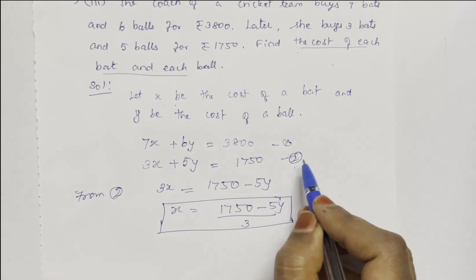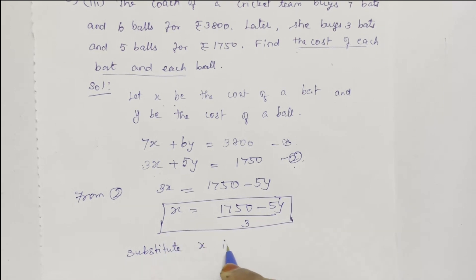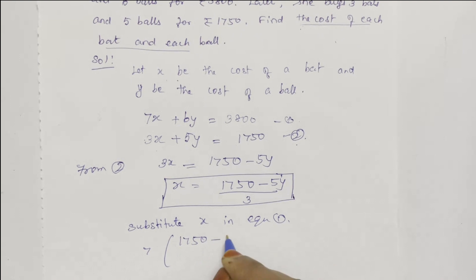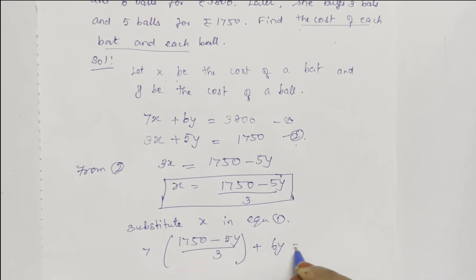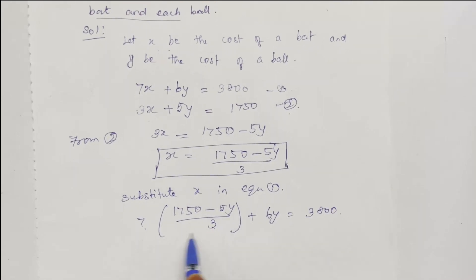In equation 1, substitute the value of X: plus 6Y equals 3800. Multiply and cancel out the terms.